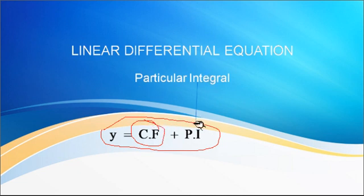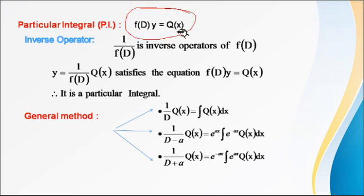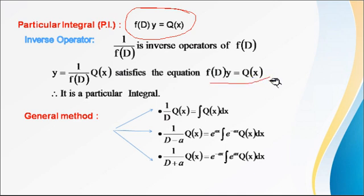In this lecture we will study how to find out PI. The general form of a linear differential equation is f(D) of y equal to Q(x). Here, 1 upon f(D) is the inverse operator of f(D). If y equal to 1 upon f(D) into Q(x) satisfies the given linear differential equation, then it is called the particular integral. So in this lecture we will study how to find out PI in the general method.